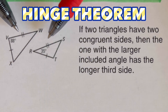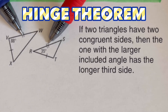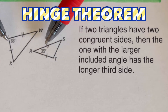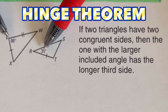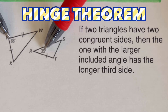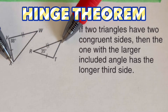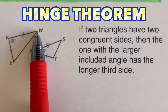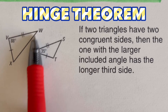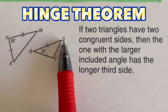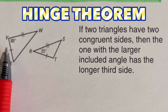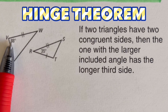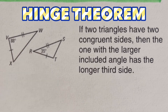Looking at this figure, we have two pairs of congruent sides. We're comparing angle V, which is 88 degrees, and angle R, which is 35 degrees. Across from these angles are line segments WX and ST. From the Hinge Theorem, we can tell that side WX is longer compared to ST, because the opening of angle V is bigger than the opening of angle R.